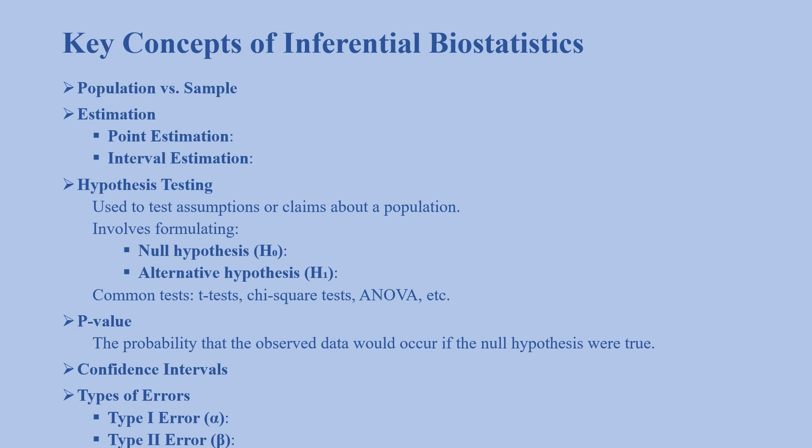The second concept is estimation. There are two types: point estimation and interval estimation. Point estimation estimates a population parameter like mean or proportion using a single value. Interval estimation provides a range, like a 95% confidence interval, where the population parameter is likely to fall.